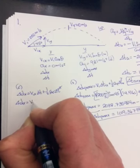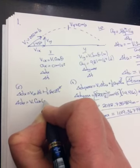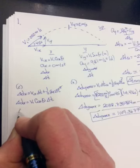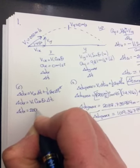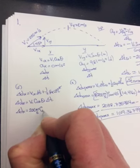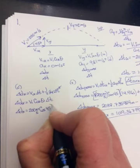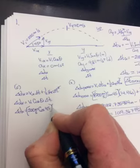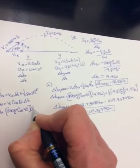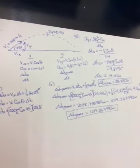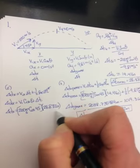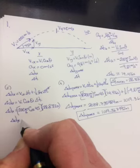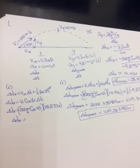It's vi_x delta t plus one half a_x delta t squared. This goes to zero. Delta d_x then equals vi cos theta. And the t we use is the total, because the range is in the total time. So 200 meters per second, cos of 45, and you're multiplying that by the total time, which was 28.832 seconds. And so this one will be rounded a little.